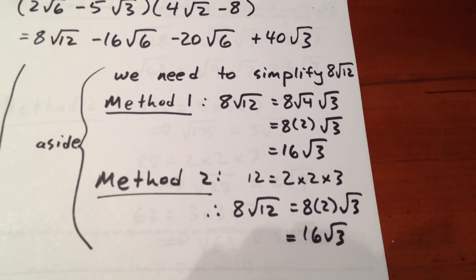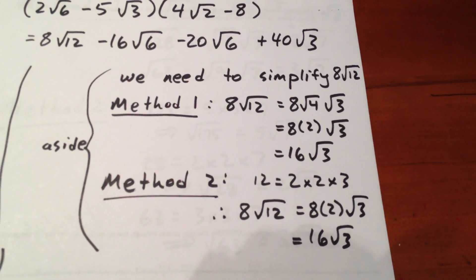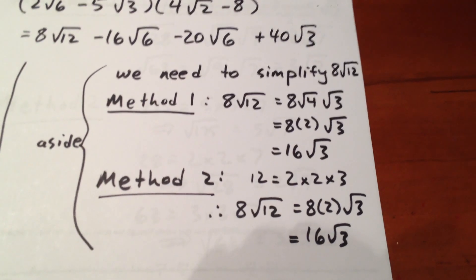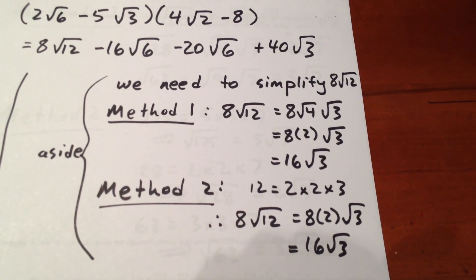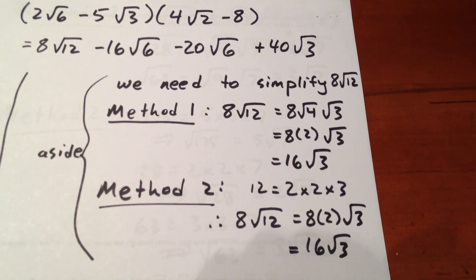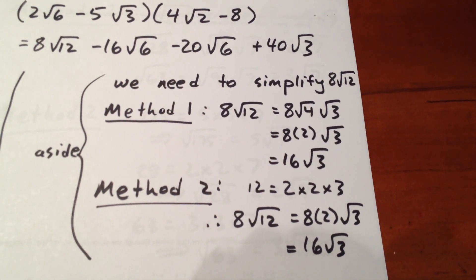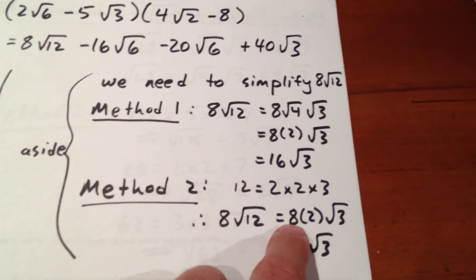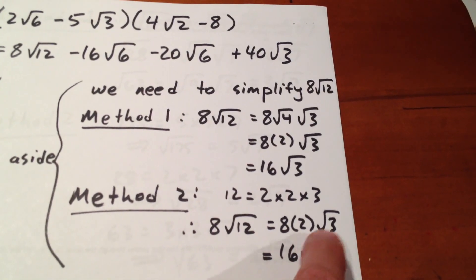Now, since the factor of 2 appears twice in the prime decomposition of 12, we can take it outside of the square root sign, and since 3 only appears once, it remains inside. So 8√12 becomes 8 times 2 times √3, which is 16√3.